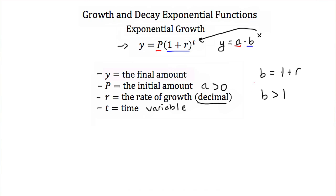Well, if we know that a is greater than 0 and b is greater than 1, we can get a rough idea what our exponential growth graph is going to look like. We can expect our graph to look something like this.